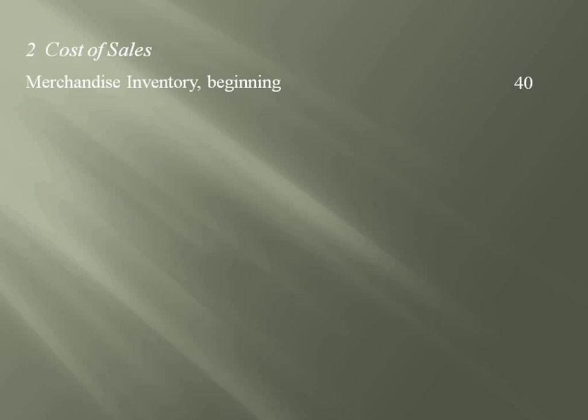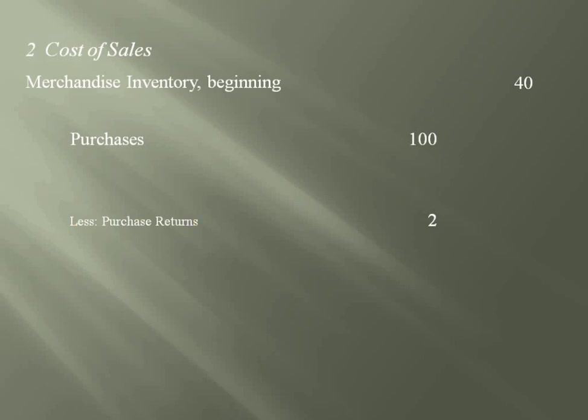After a few days, you purchased online 100 bars on behalf of your business. Those 100 bars are your store's purchases, again in terms of number of bars. Upon closer inspection, you noticed that two of those chocolate bars are of a different kind. So you returned the two bars to the seller. Those two bars are your store's purchase returns, which decreased the 100 bars you had purchased to 98 bars. The 98 bars are considered as net purchases.